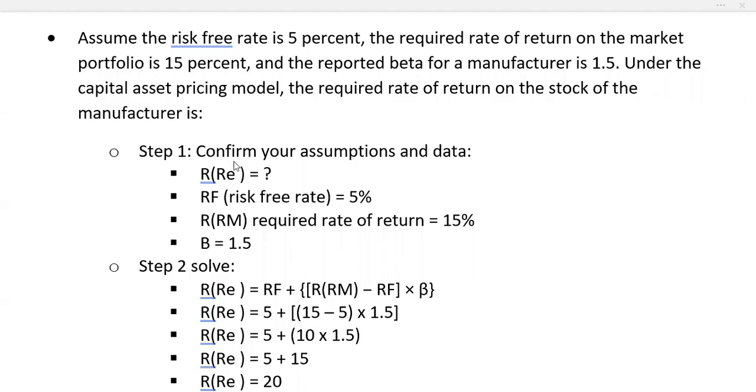For step one, let's confirm what we know. R(Re) is unknown. RF is 5%, the risk-free rate. R(RM), the required return on the market, equals 15%. And your beta is 1.5. To calculate R(Re),